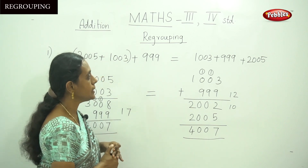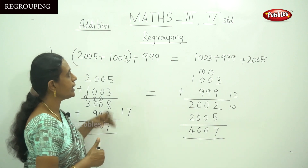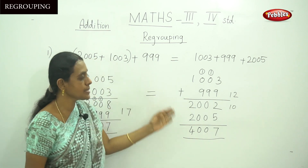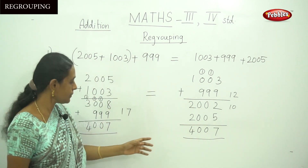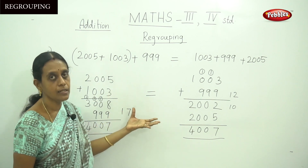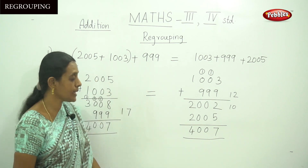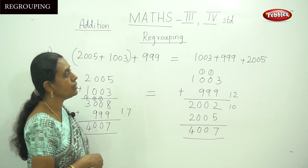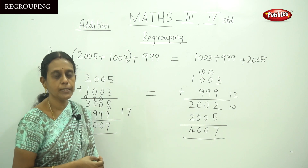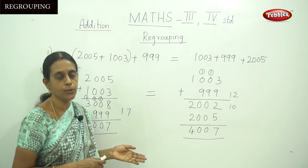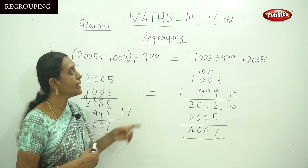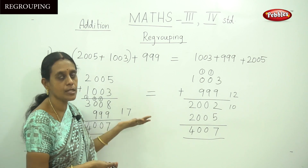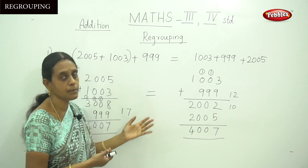Both the left-hand side and right-hand side give the same answer, 4007. When you rearrange and regroup the numbers, the addition sum is the same. This is the fourth property. So we have discussed all four properties with examples: first, adding 0 keeps the number the same; second, adding 1 gives the successor; third, order of numbers does not change the sum; and fourth, regrouping means rearranging the numbers and the answer will still be the same.